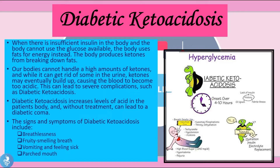Because the body looks to fats for energy, when the fatty acids are broken down they produce ketones, which can be used as fuel but also create an acidic environment. When there is too much acid in the blood the patient can go into shock and then into a coma. This is a very severe complication and is usually seen in patients who suffer from type 1 diabetes.